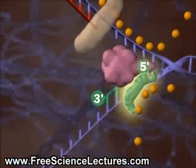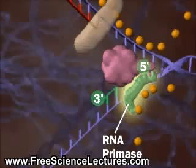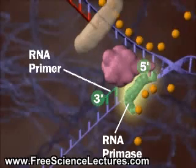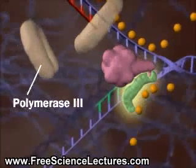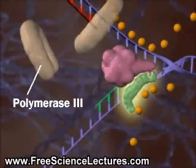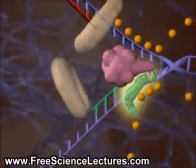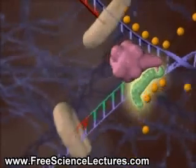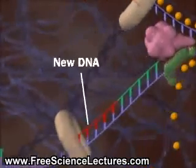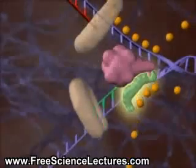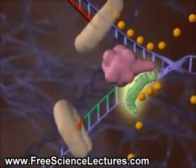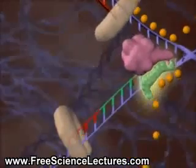First, an RNA primase lays down an RNA primer. Then, DNA polymerase 3 lays down new DNA. The process repeats again and again.